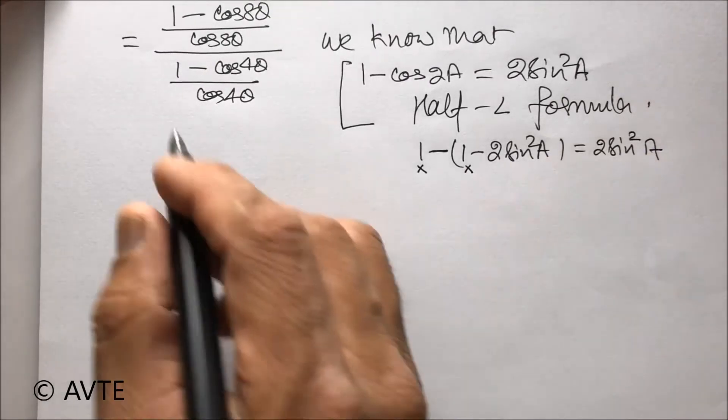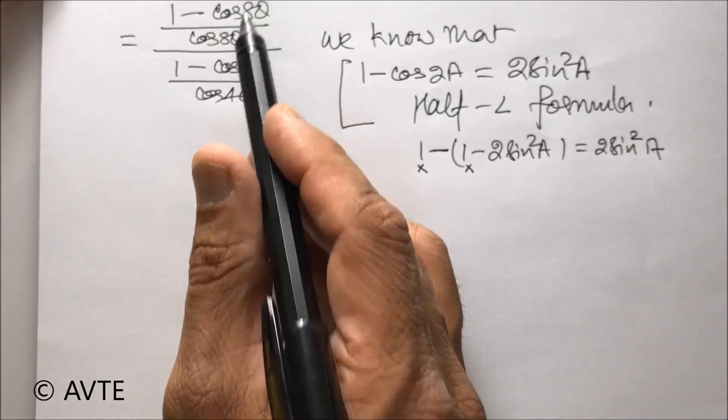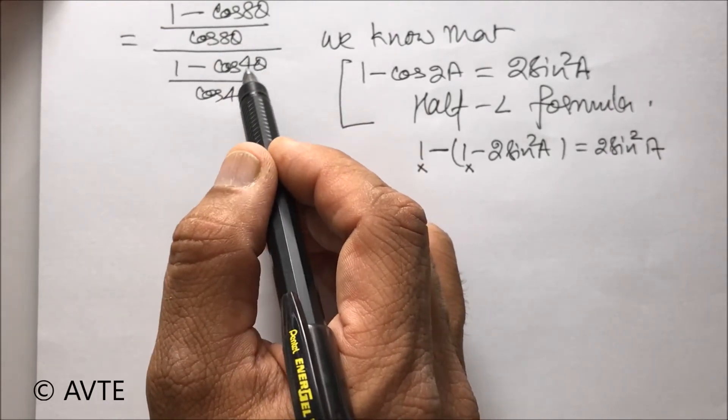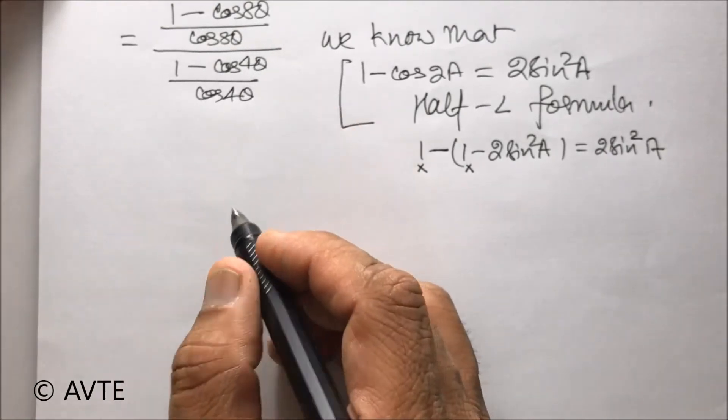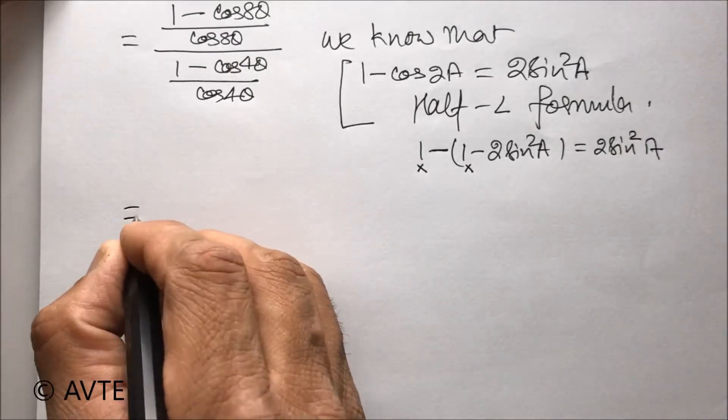But since this is a lengthy question, we'll use it directly. For 8 theta, the half angle of 8 theta will be 4 theta and here in the denominator, 1 minus cos 4 theta will be turning to 2 sine square 2 theta. So, applying that.